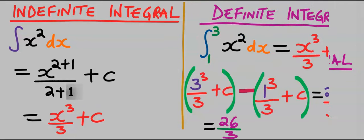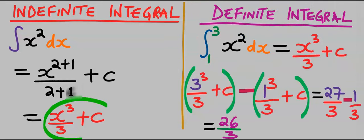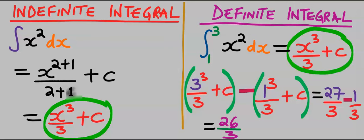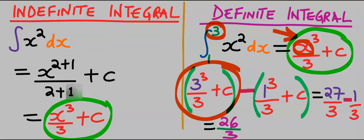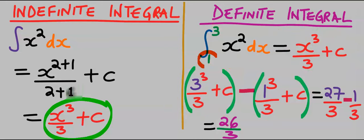For an indefinite integral our answer ends at the integrated expression plus C. However, with a definite integral we obtain the same integrated result, then start by inputting the upper limit into the result — wherever we see x we replace it with 3.